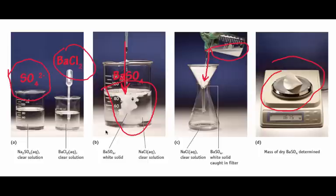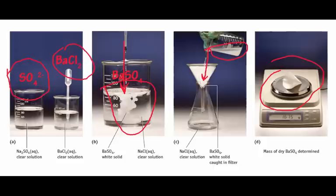And of course, if we've massed the filter paper beforehand, we know what the net mass of barium sulfate is in our sample.